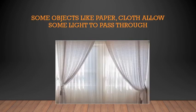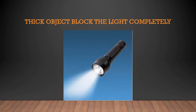Some objects like paper and cloth allow some light to pass through them — like curtains. Some curtains do not allow the whole bright sunlight to come inside, but some light can pass through, depending on the quality of the cloth. Some curtains are good enough to block the sunlight completely. Then thick objects block the light completely. If you have a torch facing a wall, you can see the wall and there will be no shadow on the other side — it completely blocks the path of light.